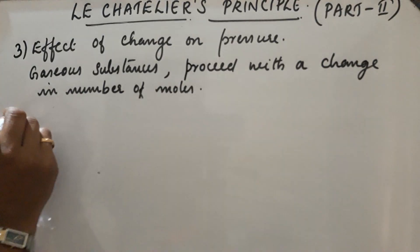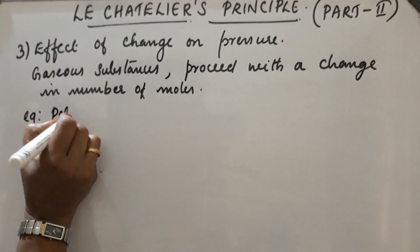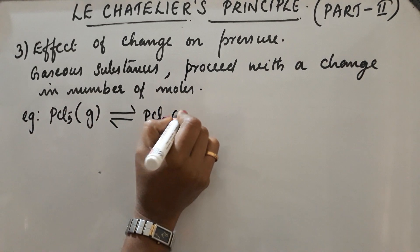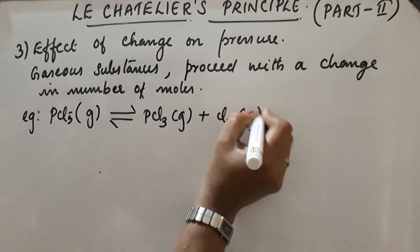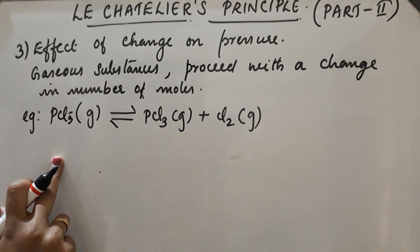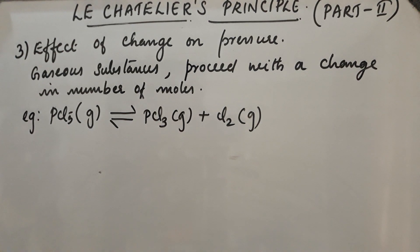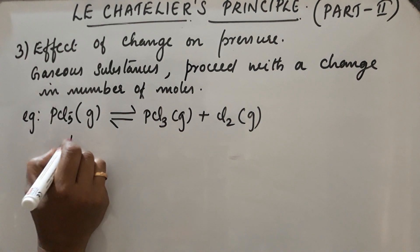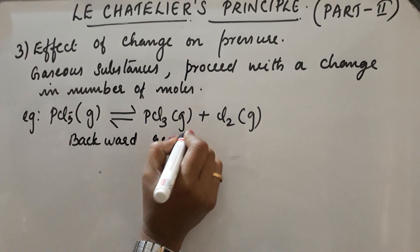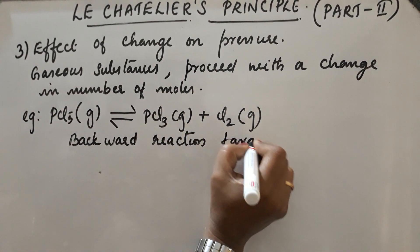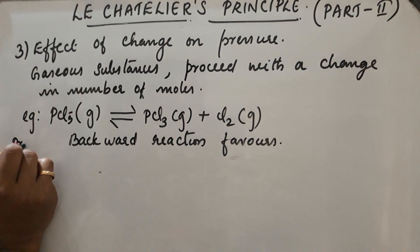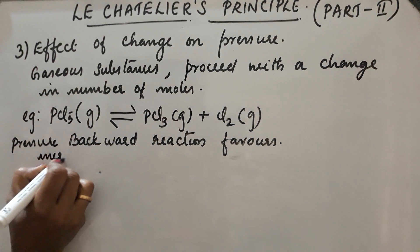Now let us take another example: PCl₅ ⇌ PCl₃ + Cl₂. Here the number of moles on the reactant side is 1 and on the product side is 2. So as pressure is increased, the reaction will shift towards the direction where number of moles is less. Therefore, the backward reaction is favored when pressure is increased.